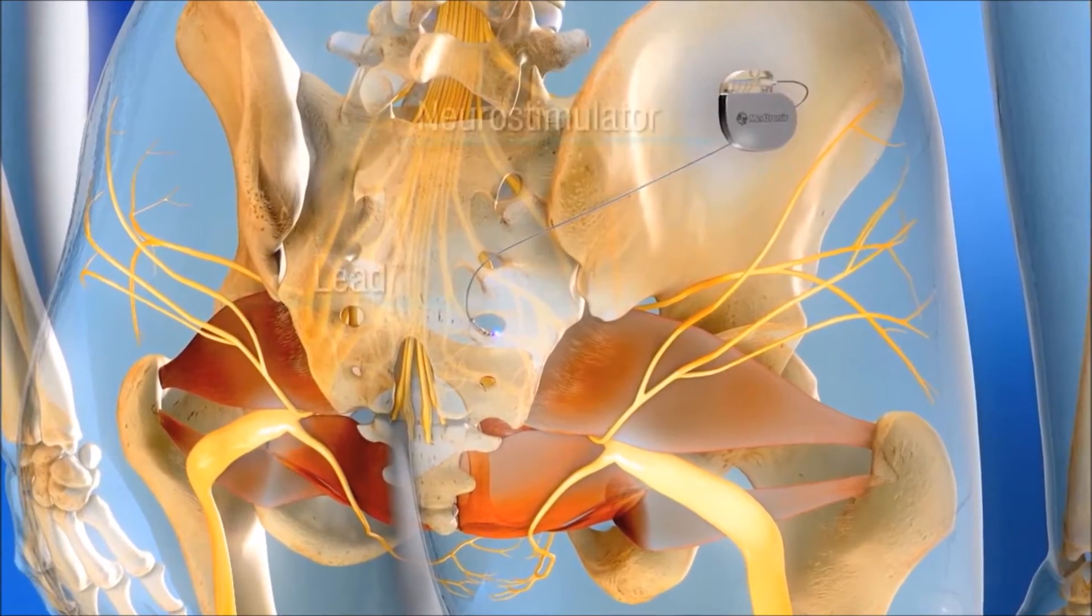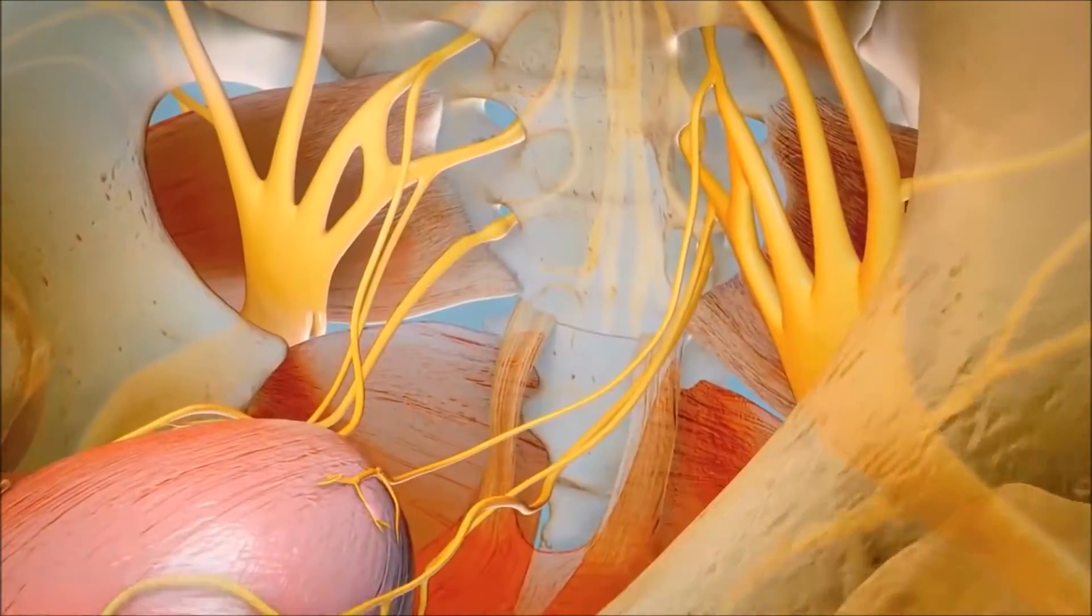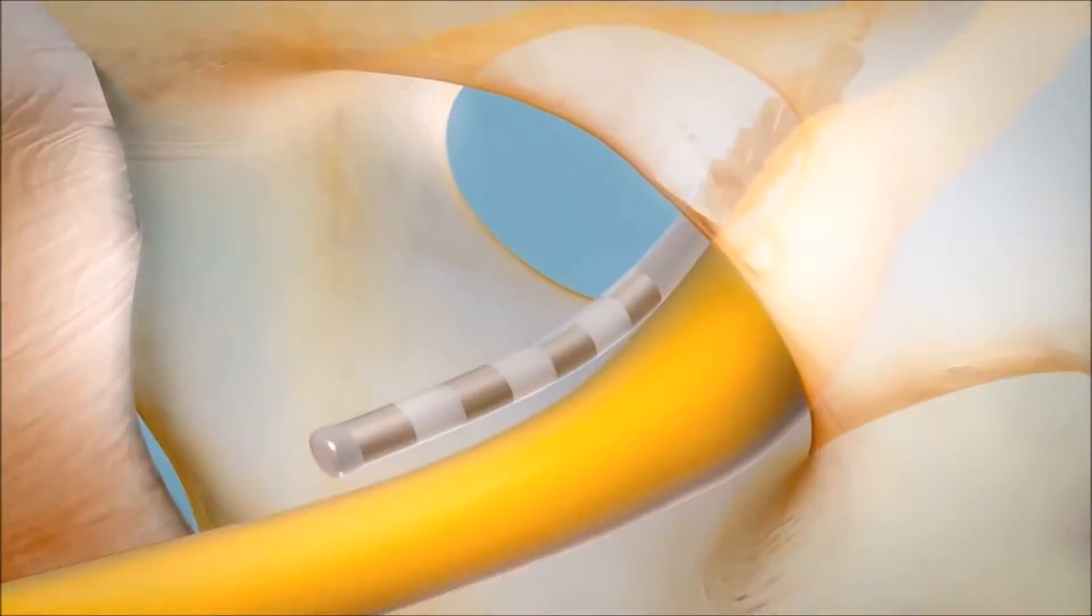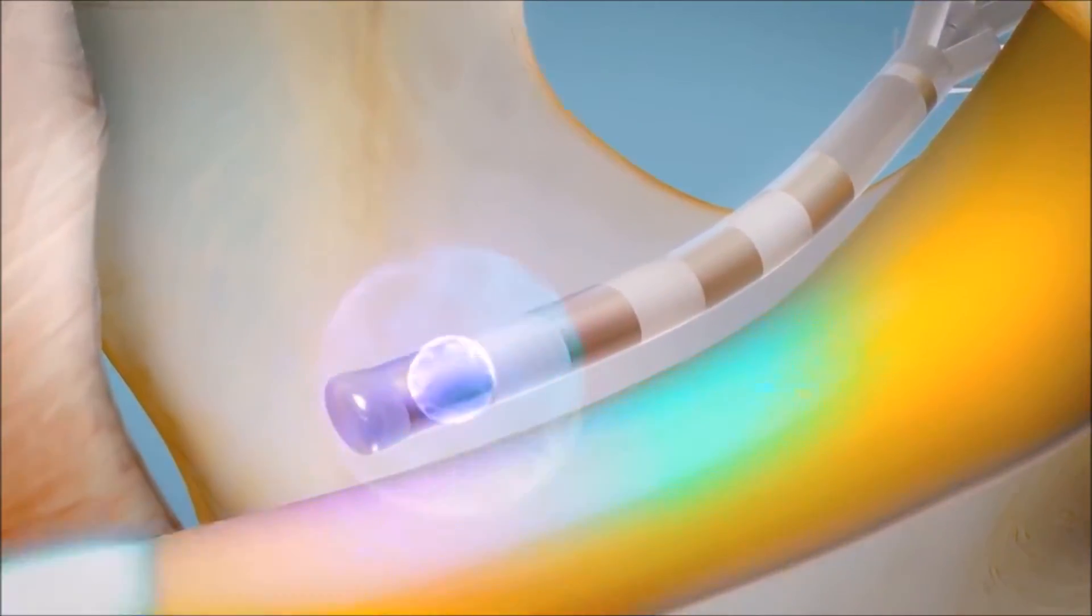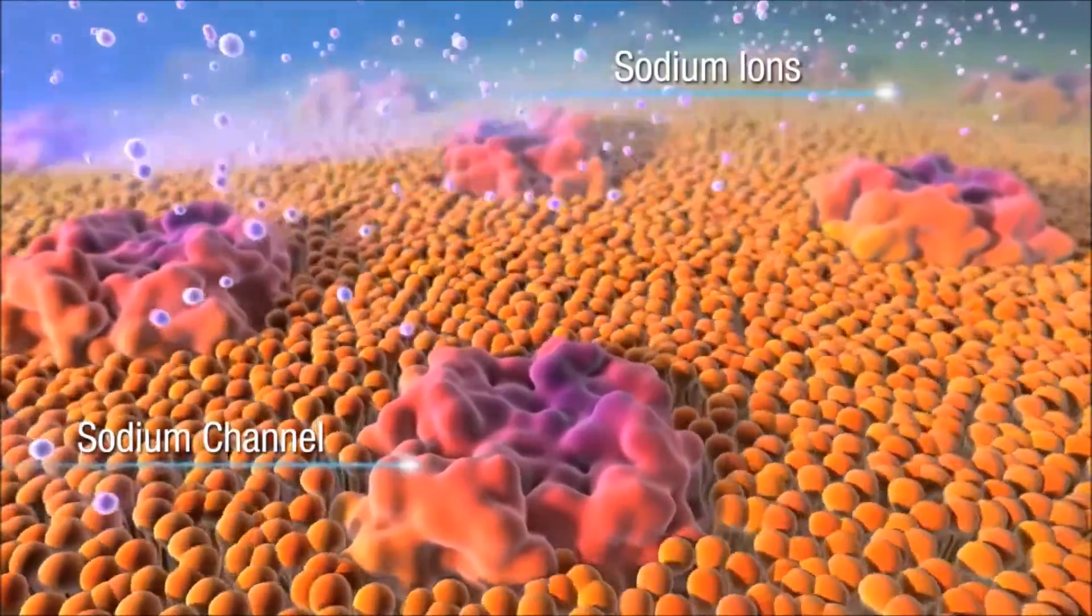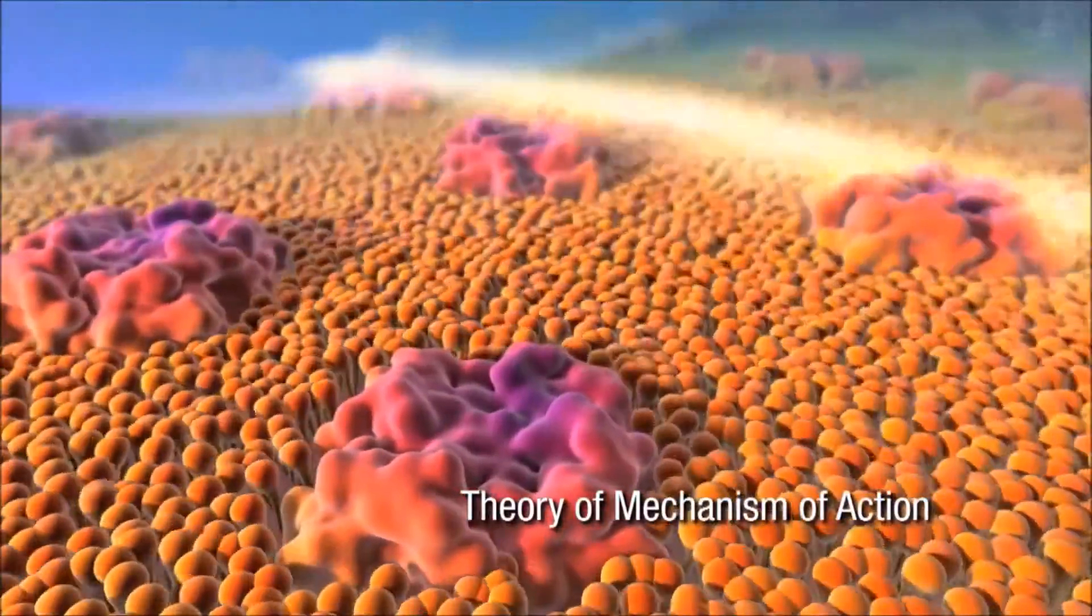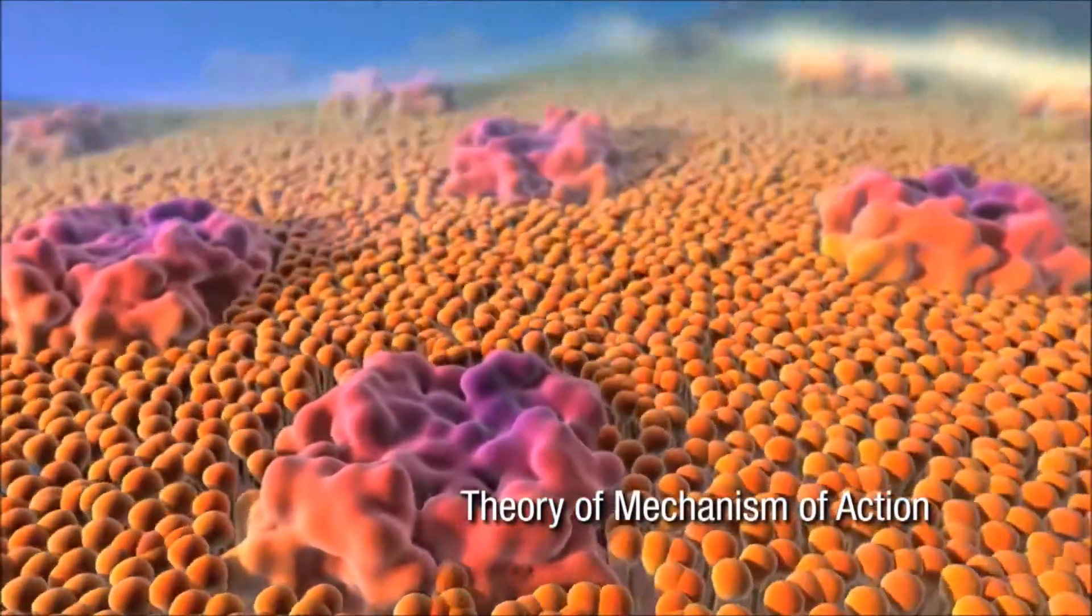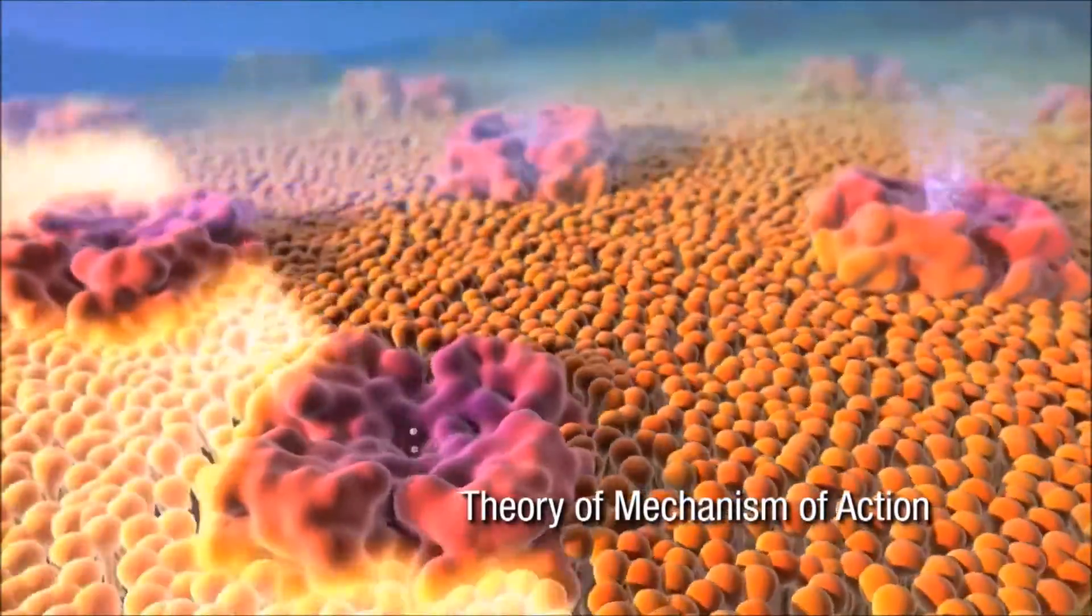Medtronic's sacral neuromodulation delivers electrical stimulation to a sacral nerve via an implanted neurostimulator. The neurostimulator provides an electrical charge to an area near the sacral nerve, which likely depolarizes the nerve, causing an action potential that propagates impulses along the axon as if the neuron naturally fired an action potential.